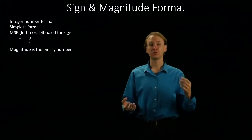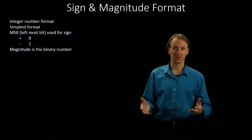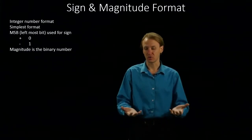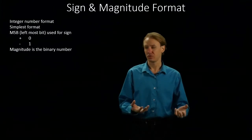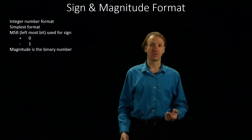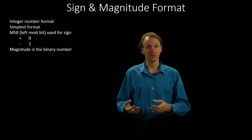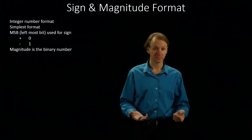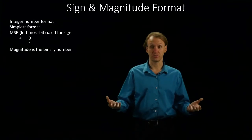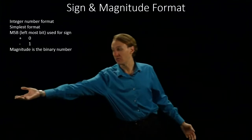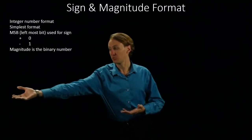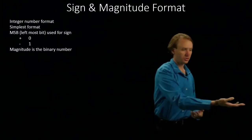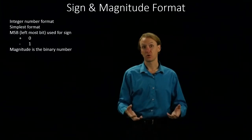Sign and magnitude is the simplest way of doing this because all we're going to do is take our regular number in binary, use one bit for the sign and the remaining bits to hold the value of the number that we've got. So if I've got a 32-bit number I will use my first bit to represent whether it's a positive or negative number and then use the other 31 bits to encode that value.